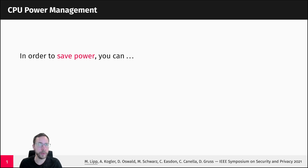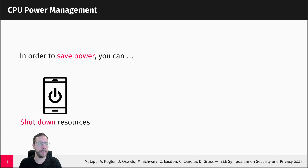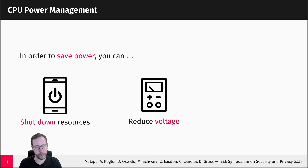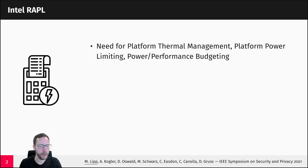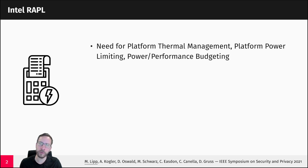In order to save power in your CPU you can do different things. For instance you can shut down resources, because if something is not running it doesn't consume any energy. You can also reduce the voltage supplying your core or the frequency your core is running on. You want to run within thermal specifications, limit energy consumption to save power, extend laptop battery life, or budget power and performance across different server customers.